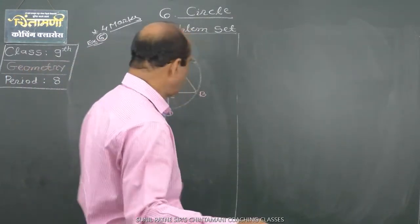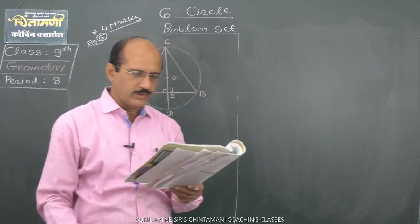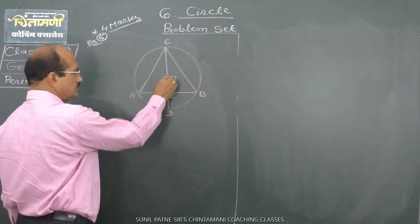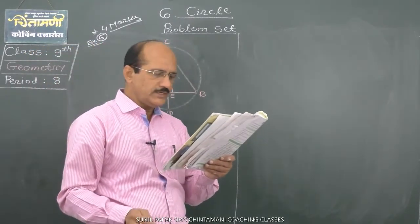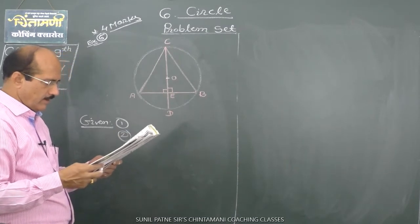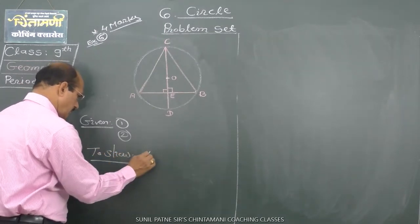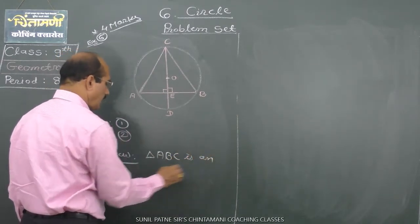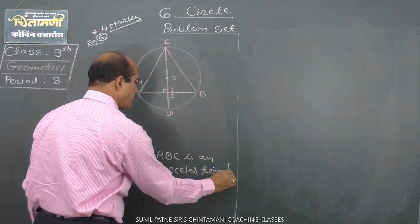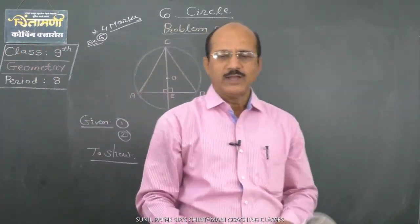Given: CD is the diameter of the circle with center O. Second, diameter CD is perpendicular to chord AB at point E. To show: triangle ABC is an isosceles triangle.